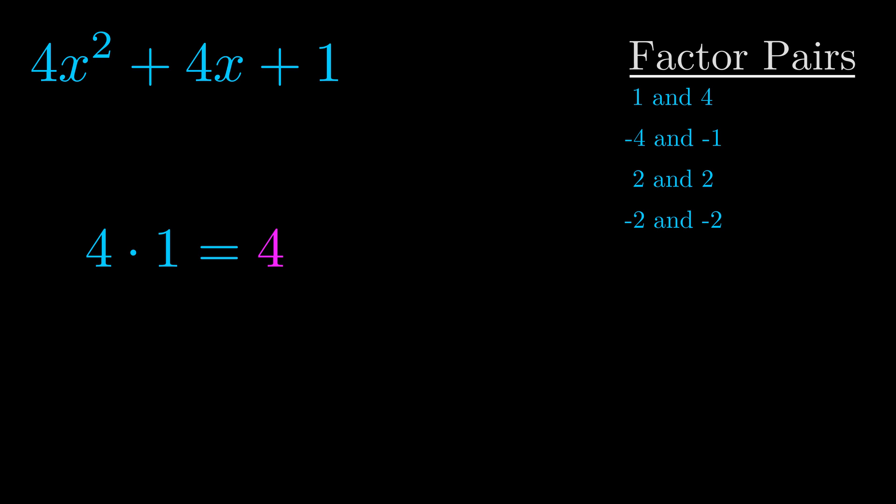The b value is the coefficient on the x term. That's the middle term, the one that we haven't done anything with yet. And really this is the only factor pair that we need.